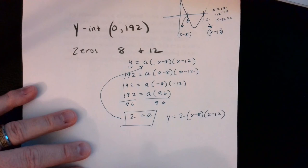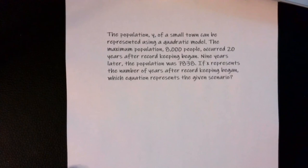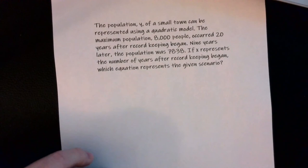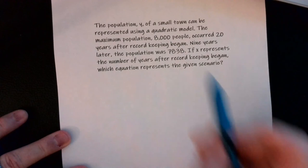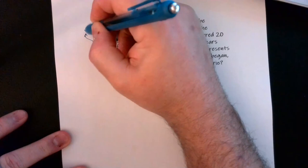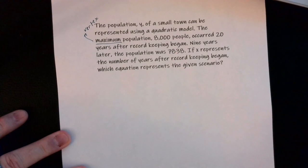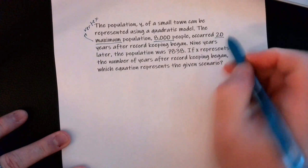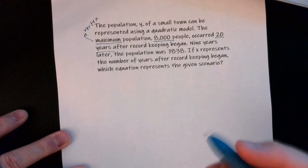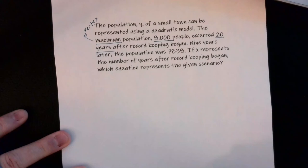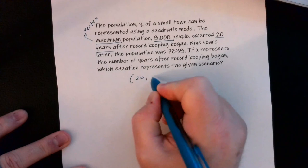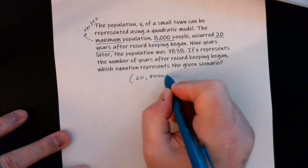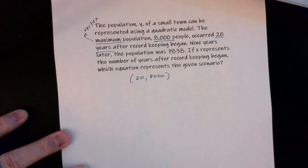There are two main forms: factored form and vertex form — know both for this modeling unit. For a word problem: the population of a town uses a quadratic model with a maximum population of 8,000 occurring 20 years after record keeping began. Maximum means vertex, so the vertex is (20, 8000).